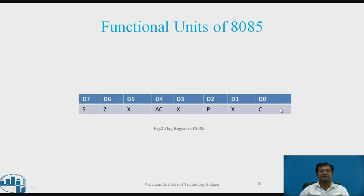The sequence of flags in the flag register is as follows: D0 holds the carry flag, D1 is don't care, D2 holds the parity flag, D3 is don't care, D4 holds the auxiliary carry flag, D5 is don't care, D6 holds the zero flag, and D7 holds the sign flag.